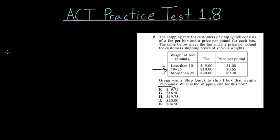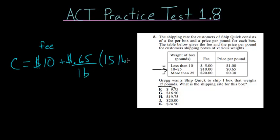Our cost, which I'll call C, is the fee which is $10, and then we also have 65 cents per pound. So 65 cents for every pound, which I'll denote as lb, and this is multiplied by 15 pounds. Since we know how many pounds total and we know the cost per pound, we just have to multiply these together.